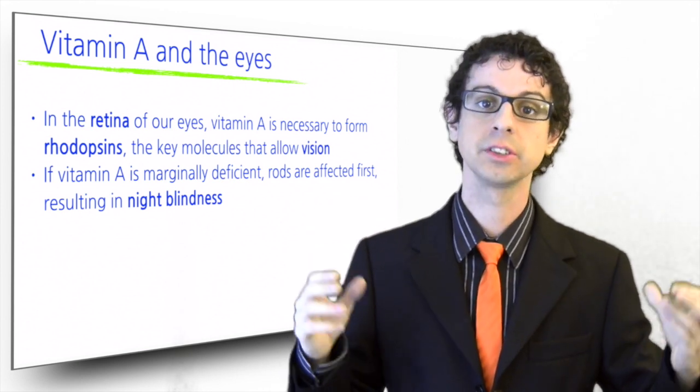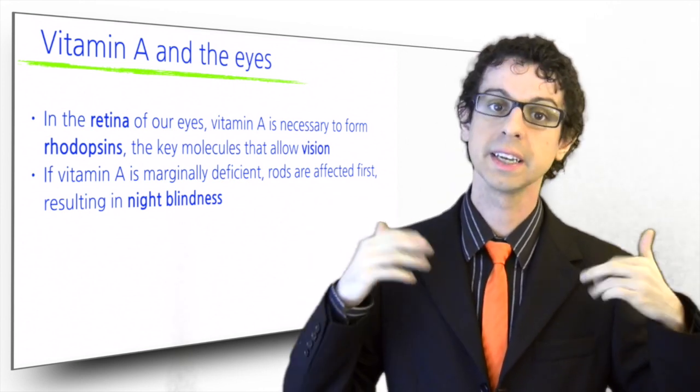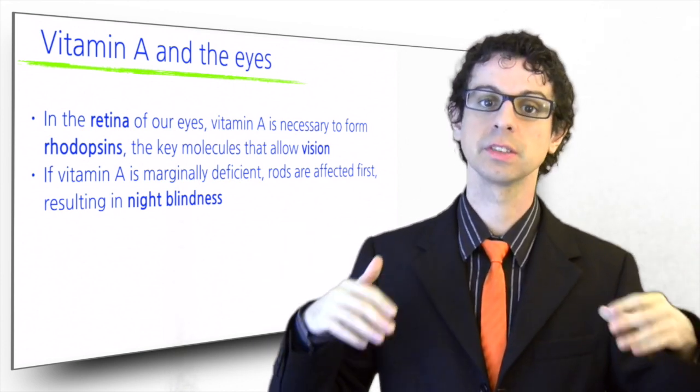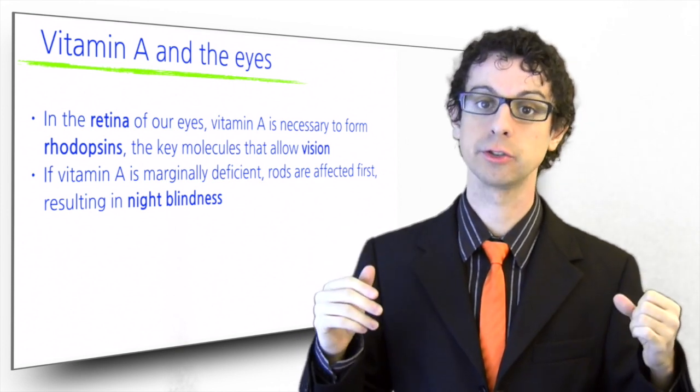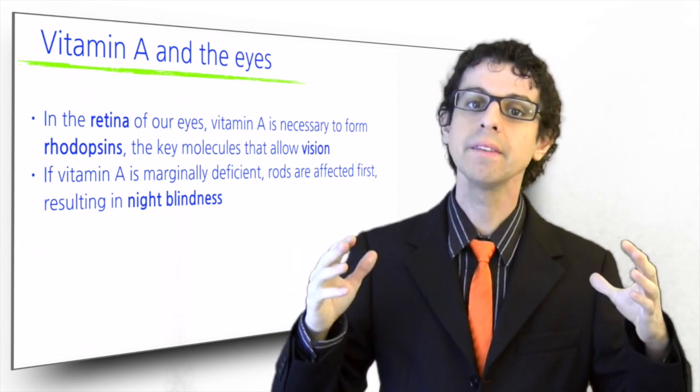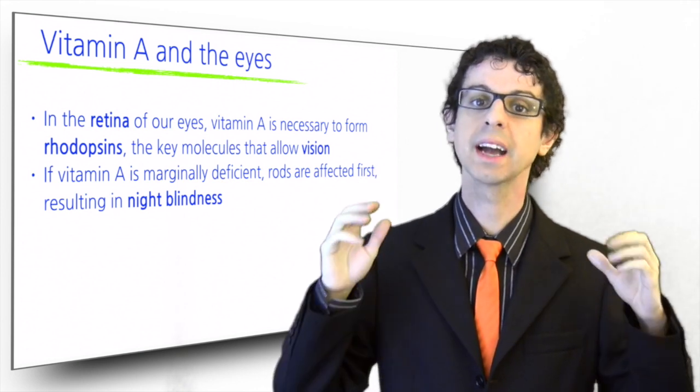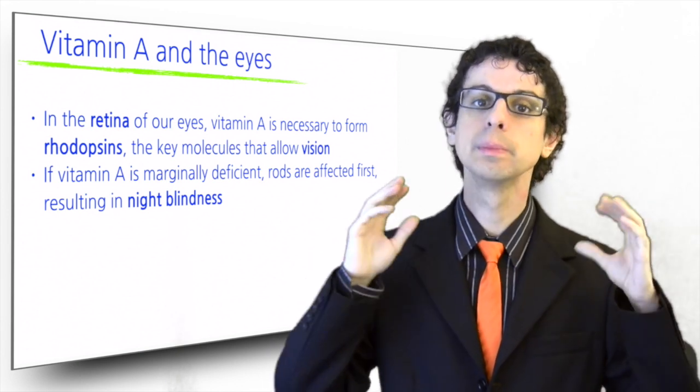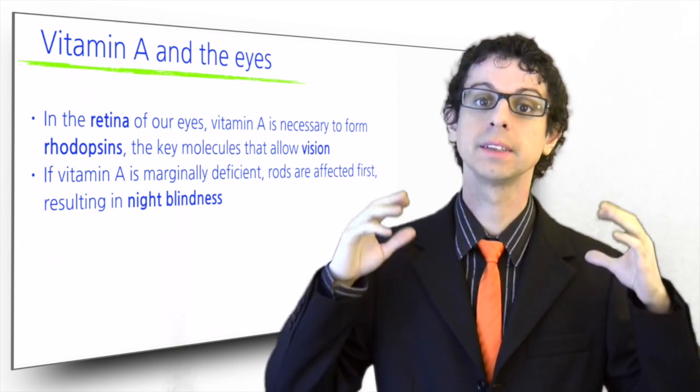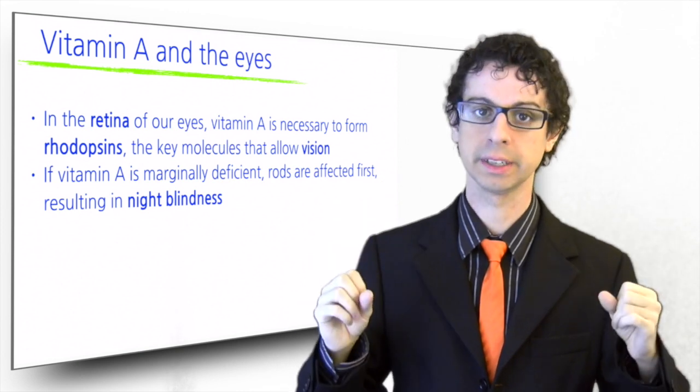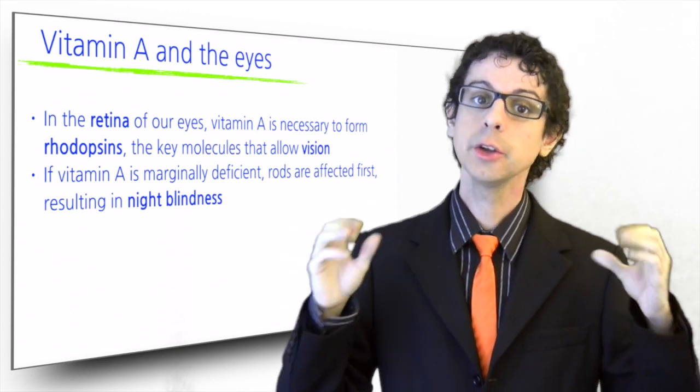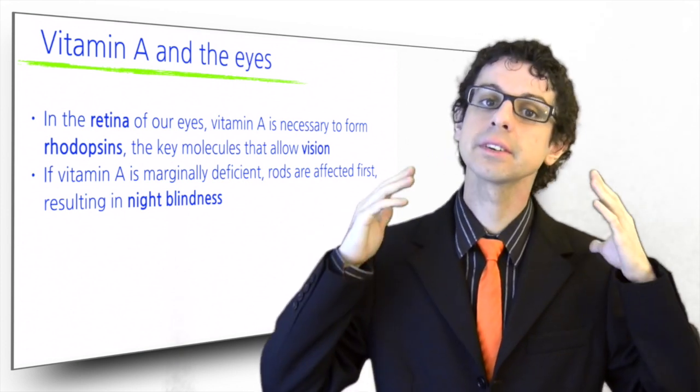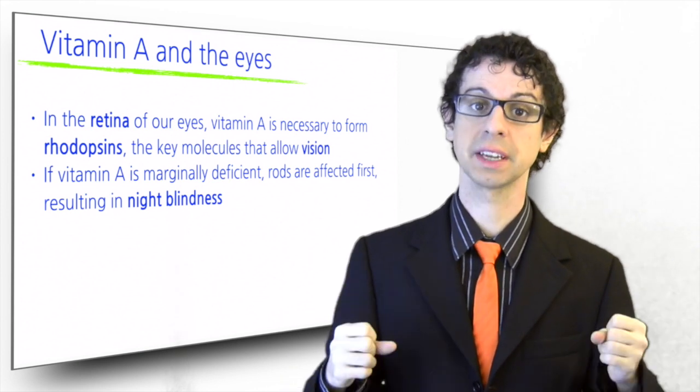And while a vitamin A deficiency in such a situation would result at worst in us bumping into some legs as we grope for our seat, there are other situations in which vitamin A deficiency could be much more dangerous. Suppose you are driving at night and the headlights of an oncoming car hit your eyes. Such sudden shift from dark to bright will bleach all your rods' rhodopsins, and as a result, you'll be blind for an instant. With adequate vitamin A, you will regain your vision within a second. But if you are deficient, it could take several seconds before you see again, enough to risk an accident.